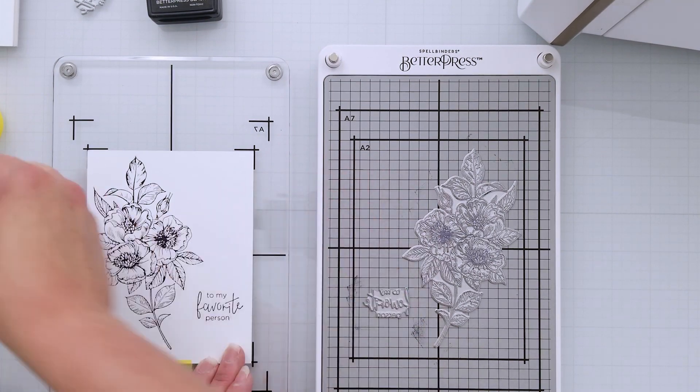To remove the card panel from the platen, I'm kind of rolling the craft tape back up on itself just to make sure I don't tear that soft cotton card panel. And here's a close-up look at the really beautiful impression you get. You can actually feel it, it's really stunning.